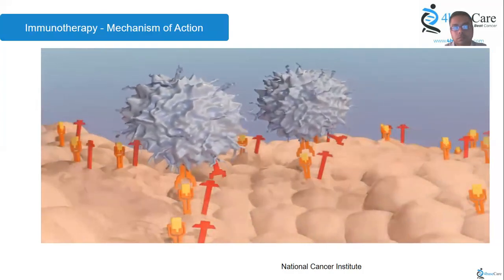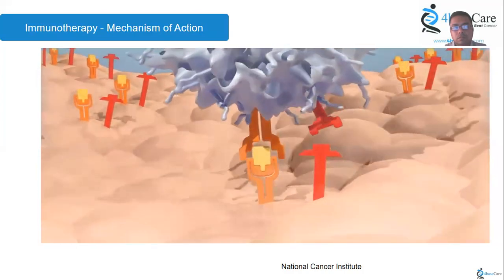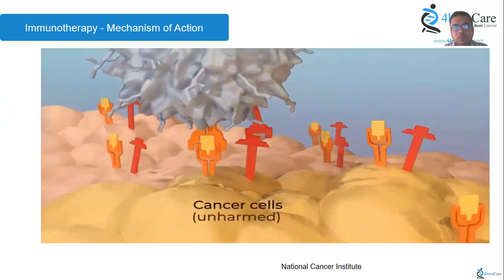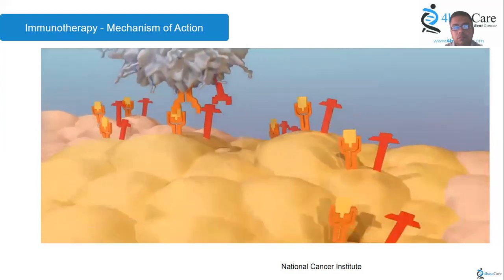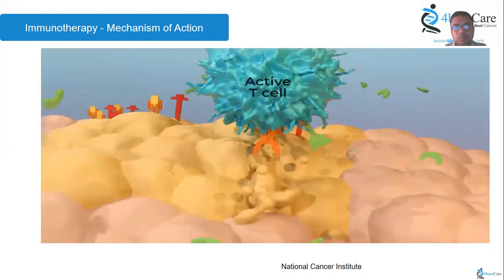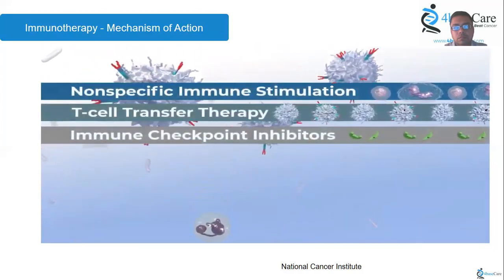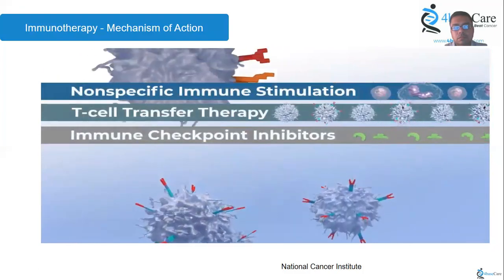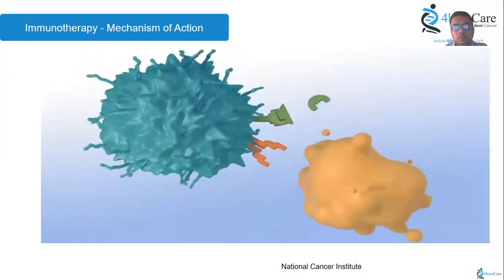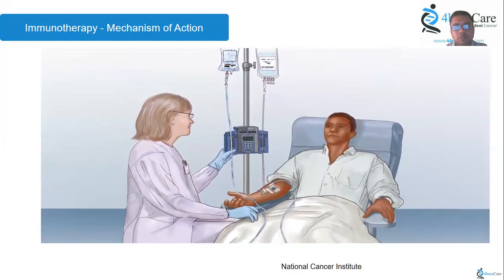Immune checkpoint inhibitors are a third type. Immune checkpoints on cell surfaces help control immune responses — they normally keep T-cells inactive until needed, preventing harm to normal cells. Cancer cells exploit these checkpoints to switch T-cells off, avoiding destruction. Immune checkpoint inhibitors are drugs that block these checkpoints, freeing T-cells to attack cancer. These three immunotherapy types are effective but don't work for every patient and can cause serious side effects. Researchers at the National Cancer Institute continue studying how to improve immunotherapy for all patients.